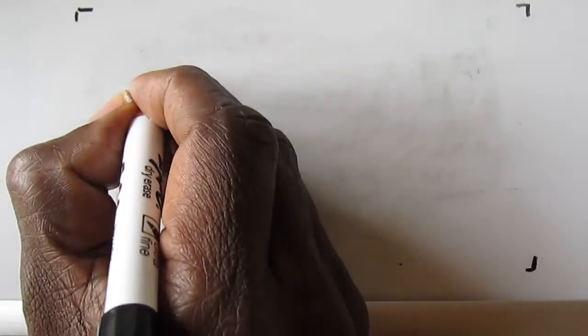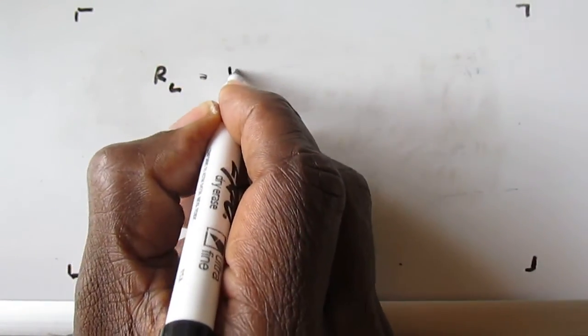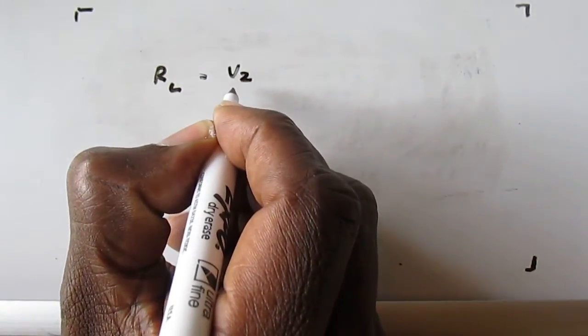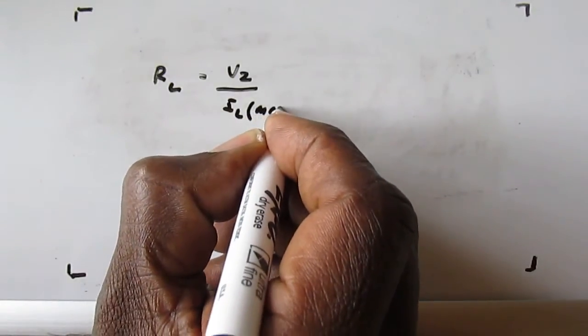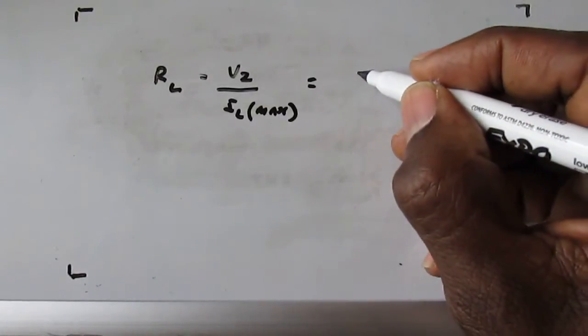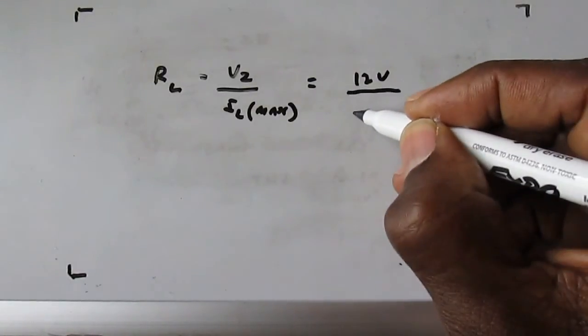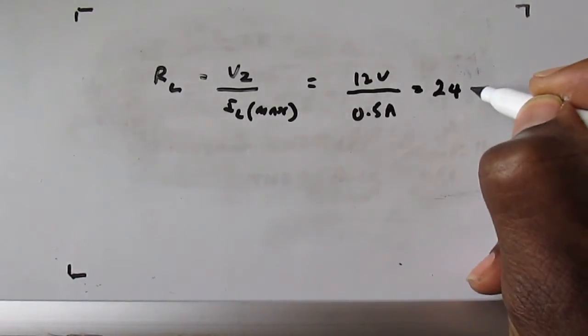So first of all, we need to calculate the load resistance from maximum current of 500 milliamps. We are going to use Ohm's law to make this calculation. RL equals VZ divided by IL max, which equals 12 volts divided by 0.5 amps, which equals 24 ohms.